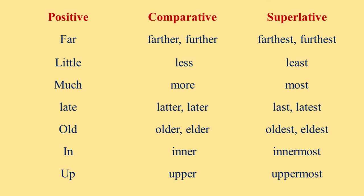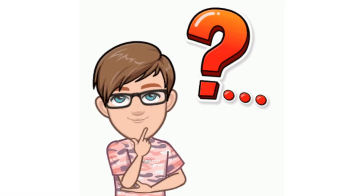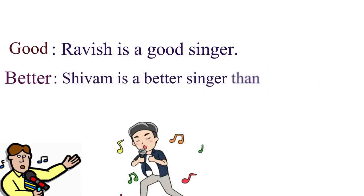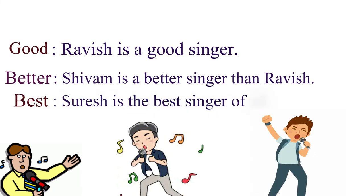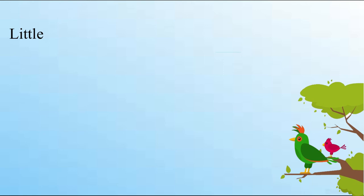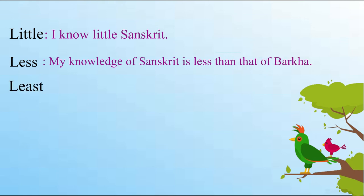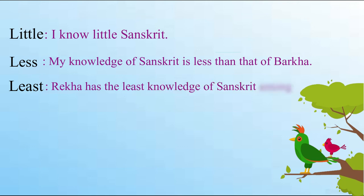Now let us see these words in sentences so that we may understand them better. Ravish is a good singer. Shivam is a better singer than Ravish. Suresh is the best singer of all the three. I know little Sanskrit. My knowledge of Sanskrit is less than that of Barkha. Rekha has the least knowledge of Sanskrit.